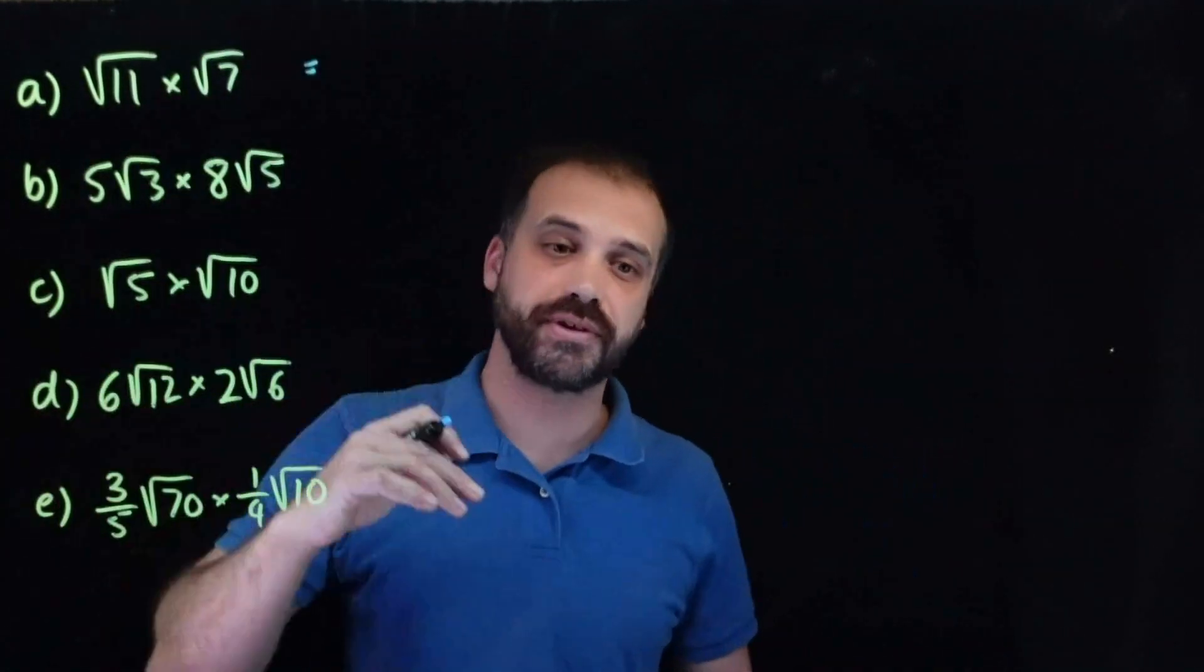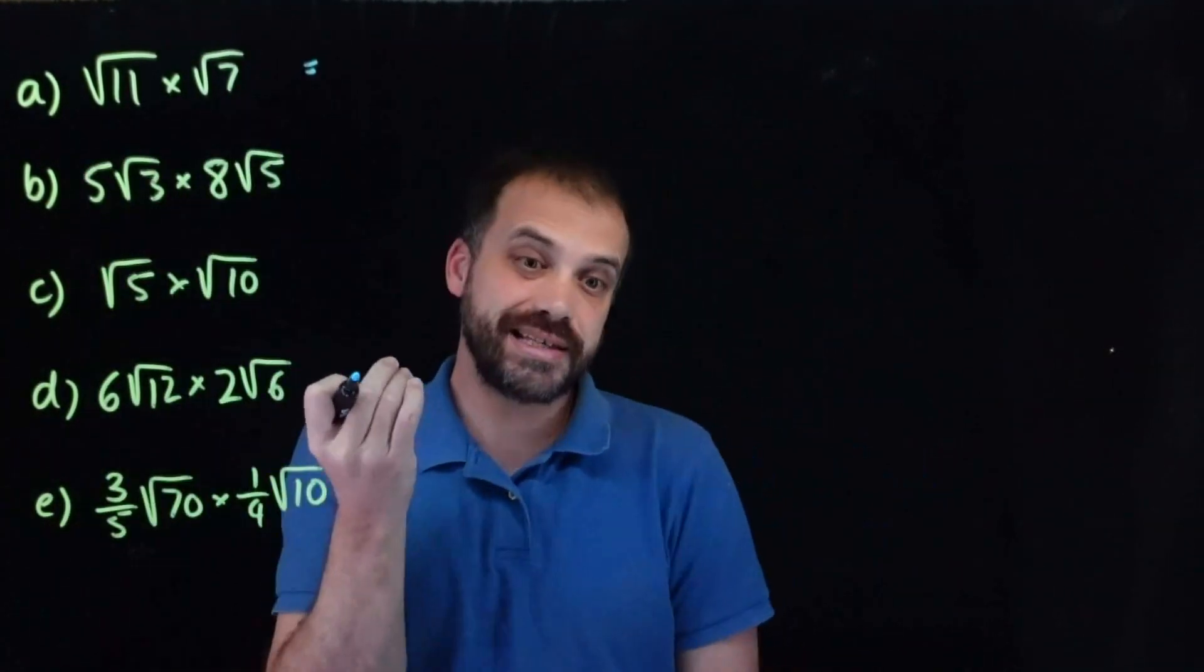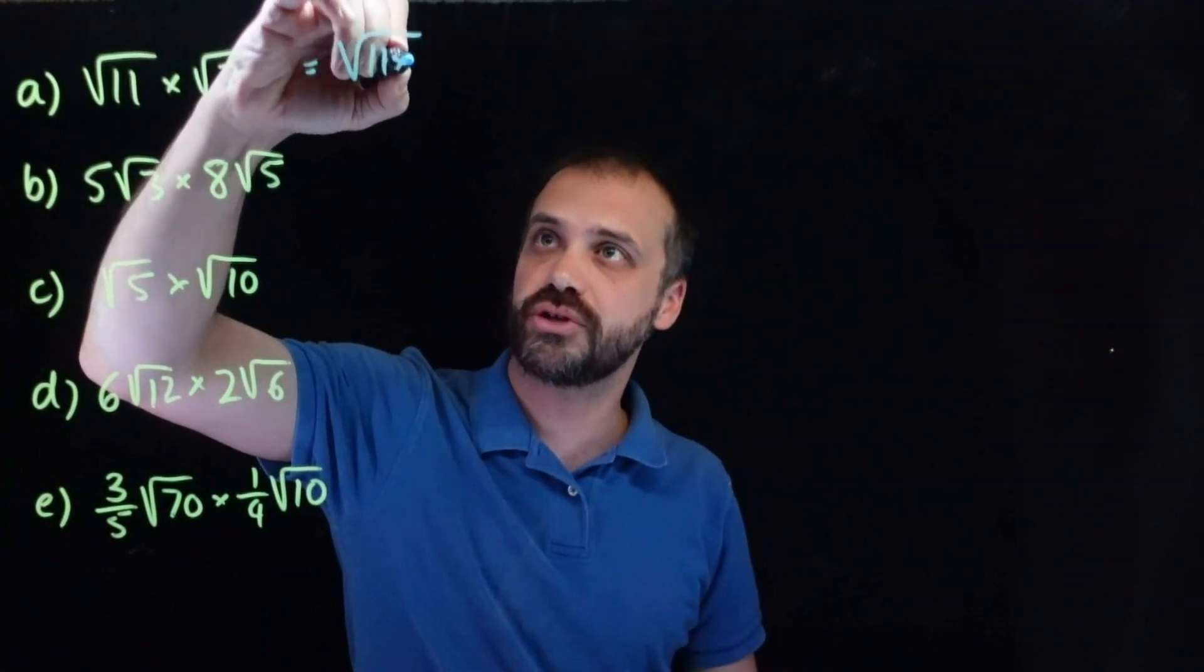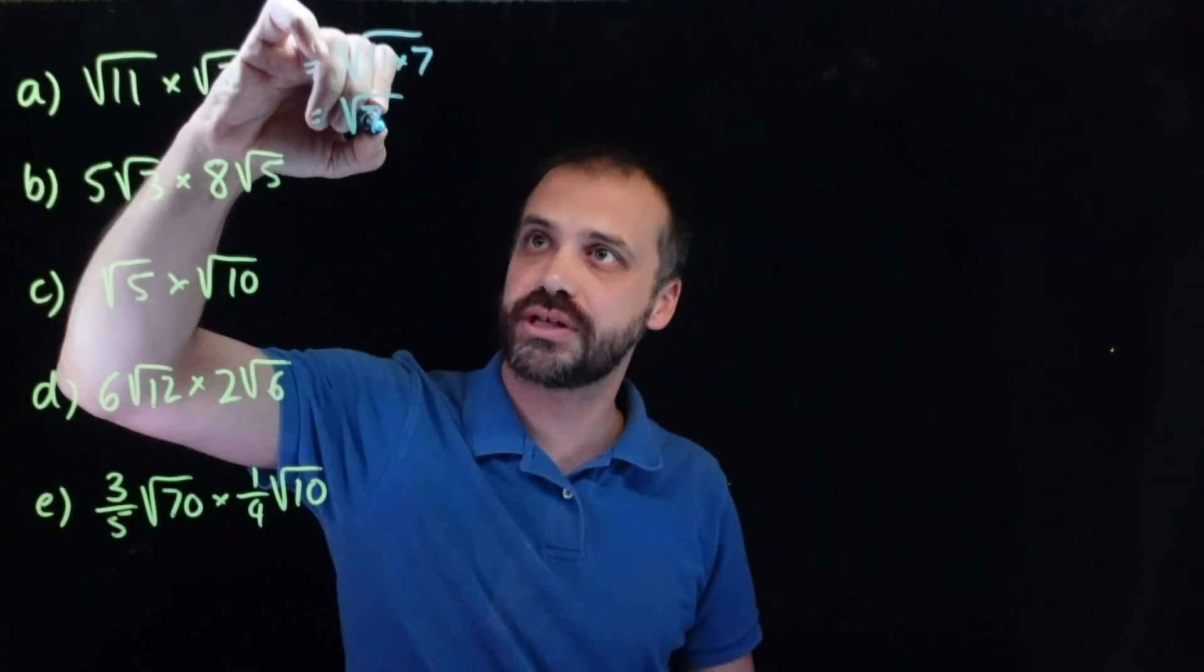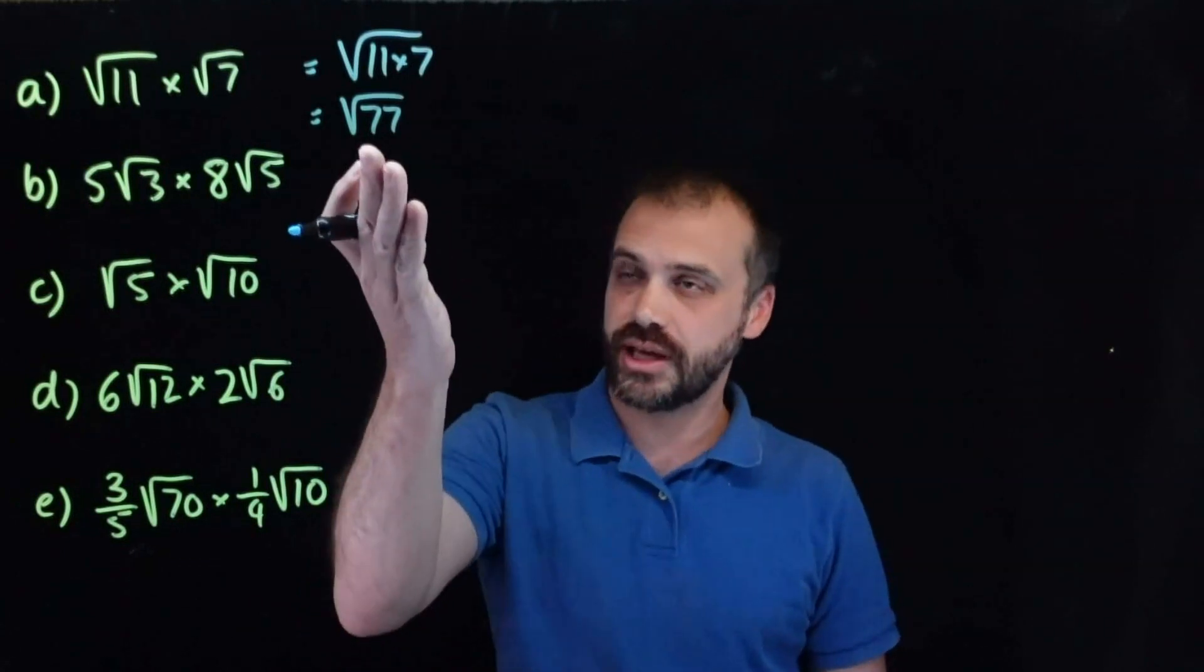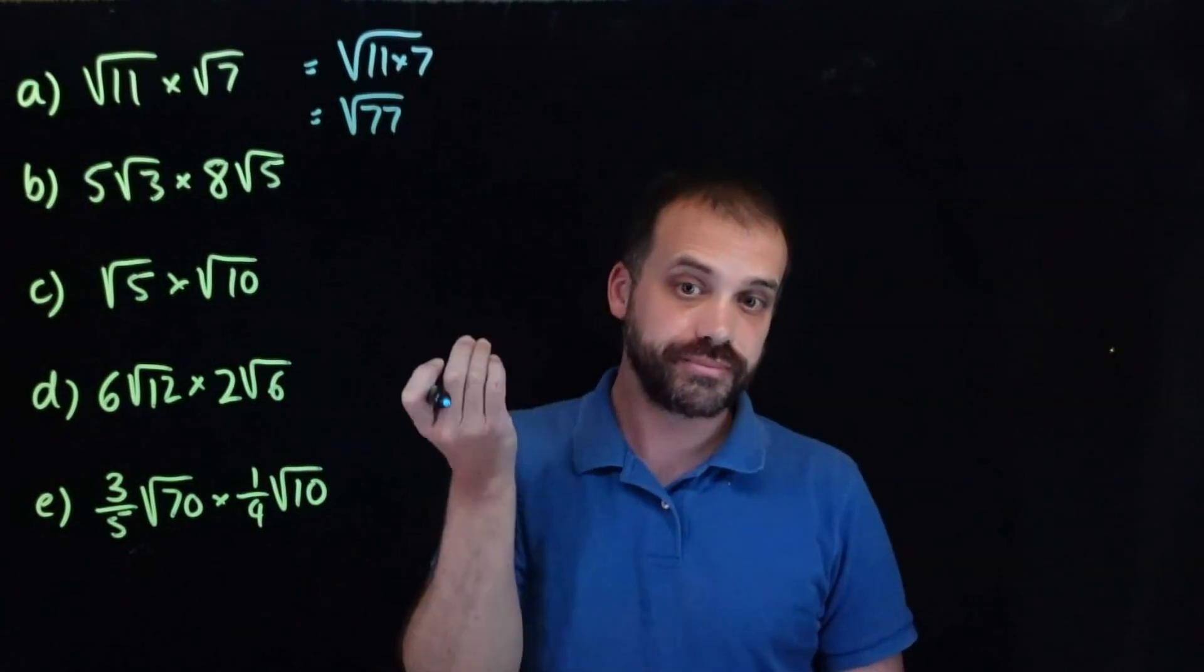Root 11 times root 7. Very simple. Multiply the things inside the surds. So root 11 times 7 is root 77. Check your answer. Can you simplify that? No, you can't. Let's move on.